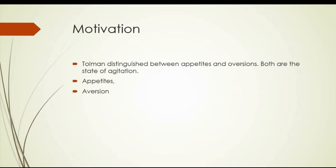The appetites and aversions are called first-order drives. They are docile and capable of modification. Humans are also motivated by second-order drives, which include curiosity. Second-order drives are relatively independent of the first-order drives; however, being weaker than the first-order drives, they usually cannot subordinate them.